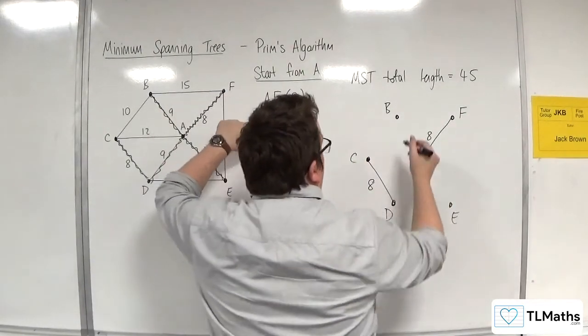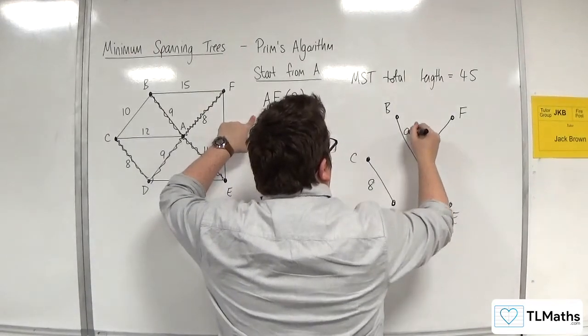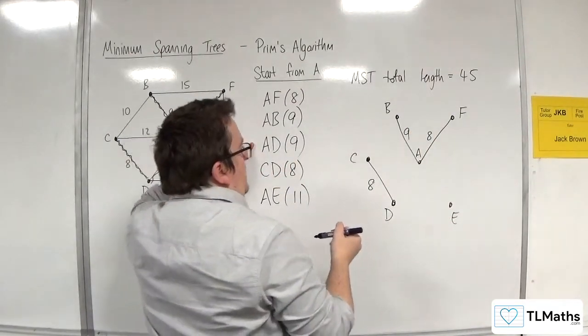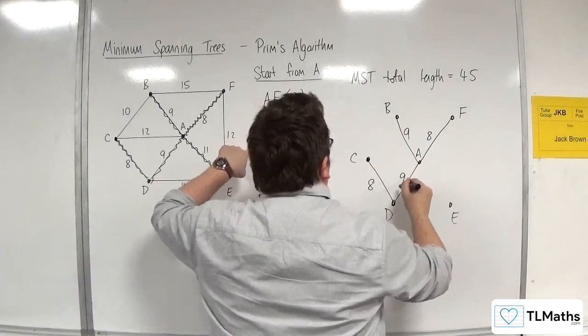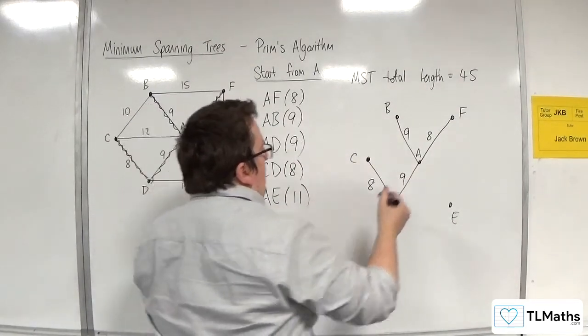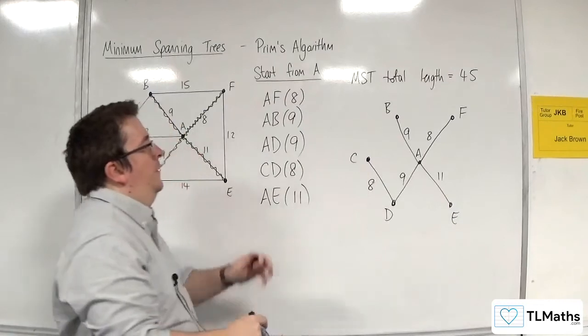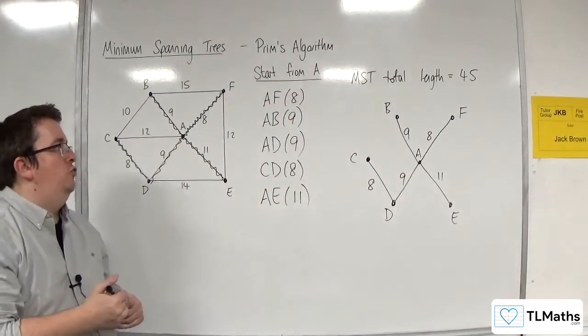We've got A, B, 9. We've got A, D, 9. And we've got A, E, 11. So that is my minimum spanning tree drawn.